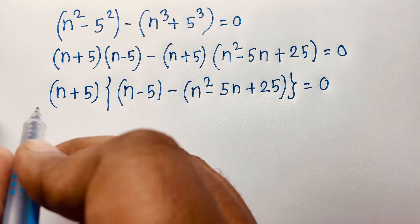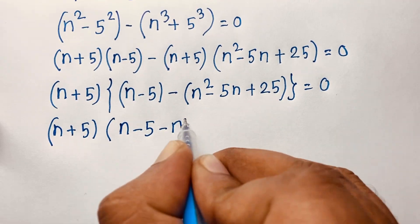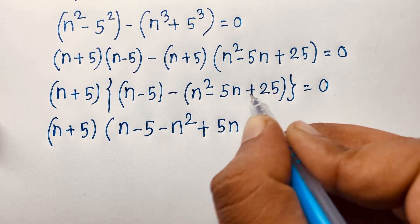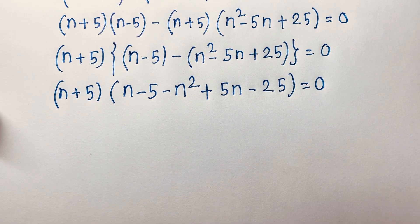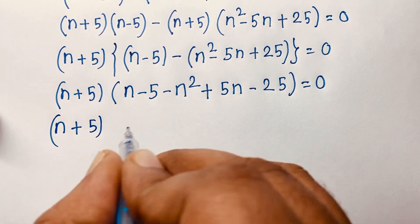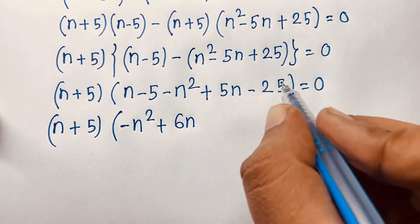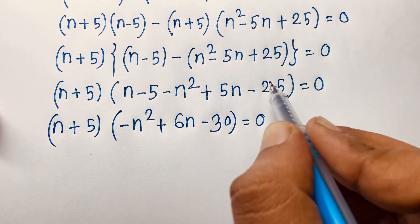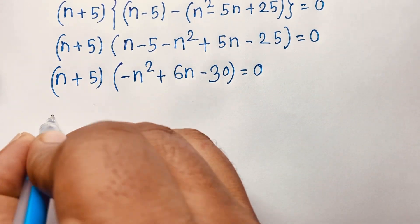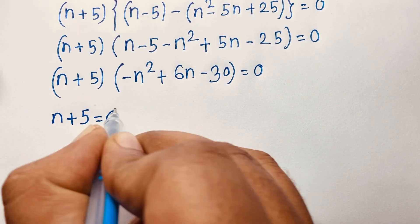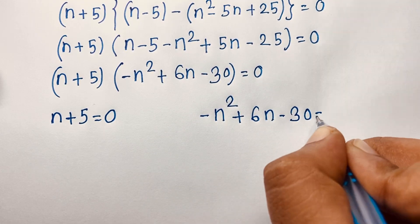You can see that n plus 5 is common. Factoring it out, we divide through and get n plus 5 times n minus 5 minus n squared plus 5n minus 25 equals 0, which simplifies to n plus 5 times negative n squared plus 6n minus 30 equals 0. So we have two cases: the first case is n plus 5 equals 0, and the second case gives us a quadratic equation: negative n squared plus 6n minus 30 equals 0.